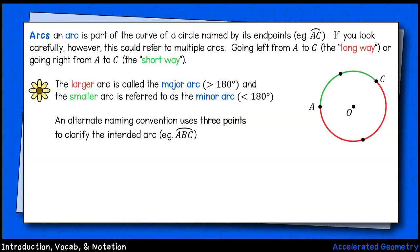Let's take a look at arcs now. An arc is part of the curve of a circle named for its endpoints. We don't refer to the distance around the circle as a perimeter. Rather, it's called the circle's circumference. An arc is just a fraction or part of a circle's circumference.